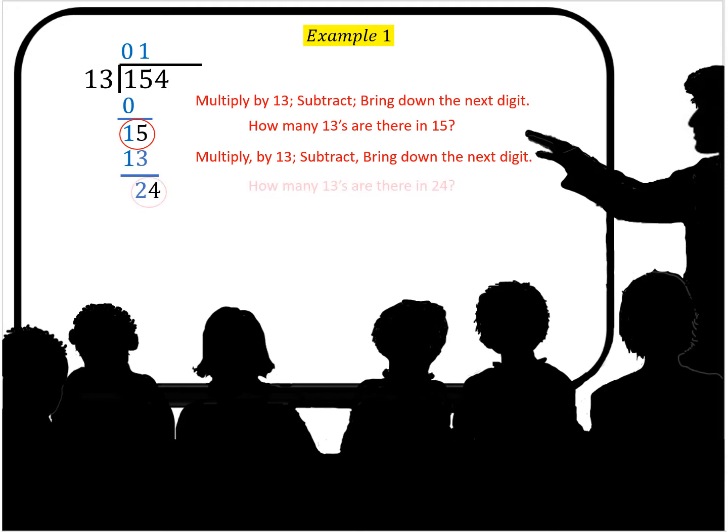Then you say how many 13s are in 15? Well there's one of those. So you put the one up at the top. Multiply one times 13 you get 13. You subtract and you get two. Then you bring down the four.